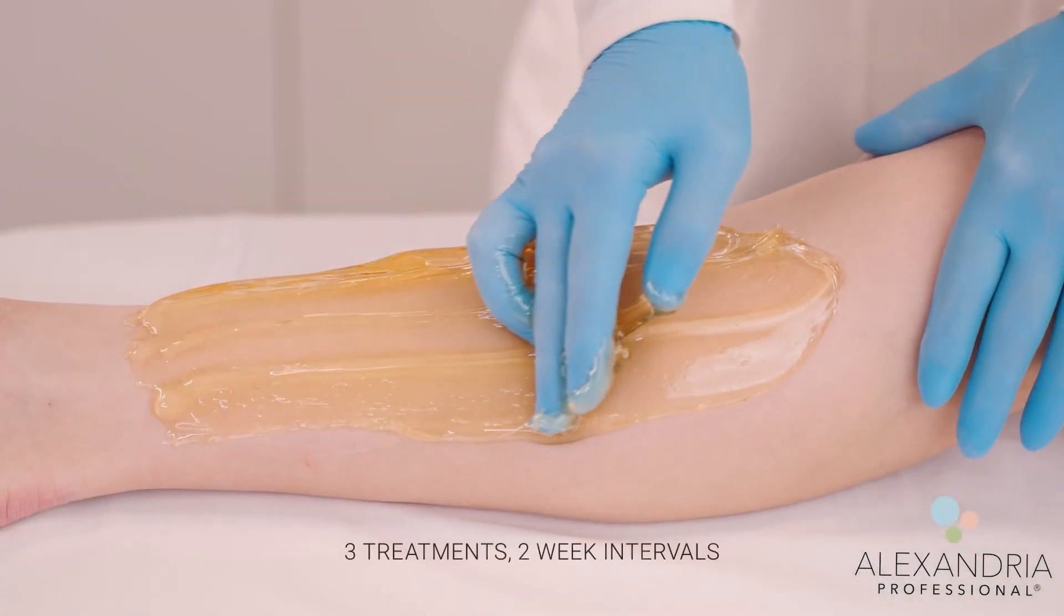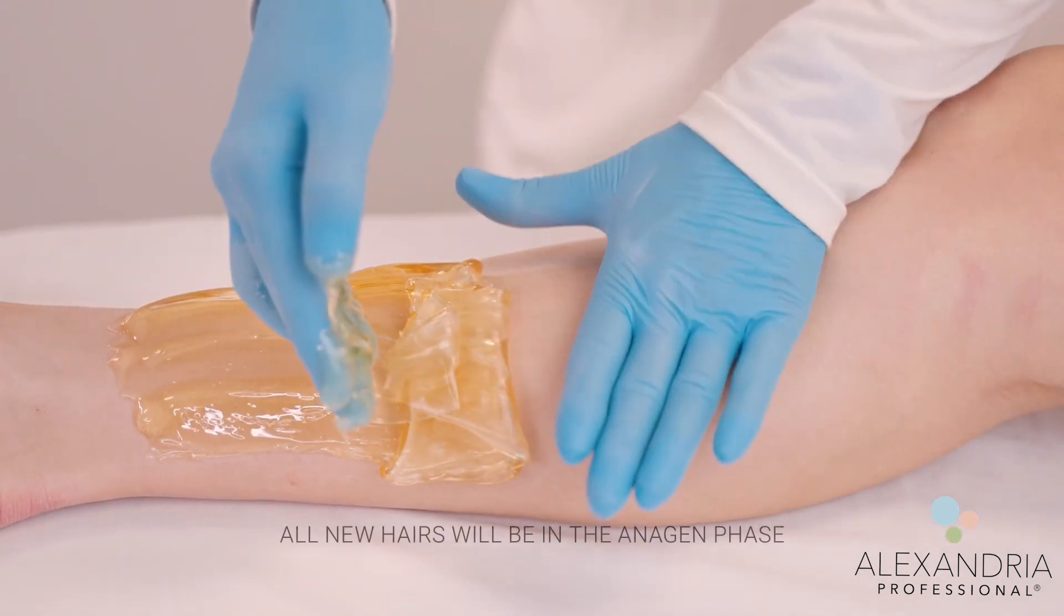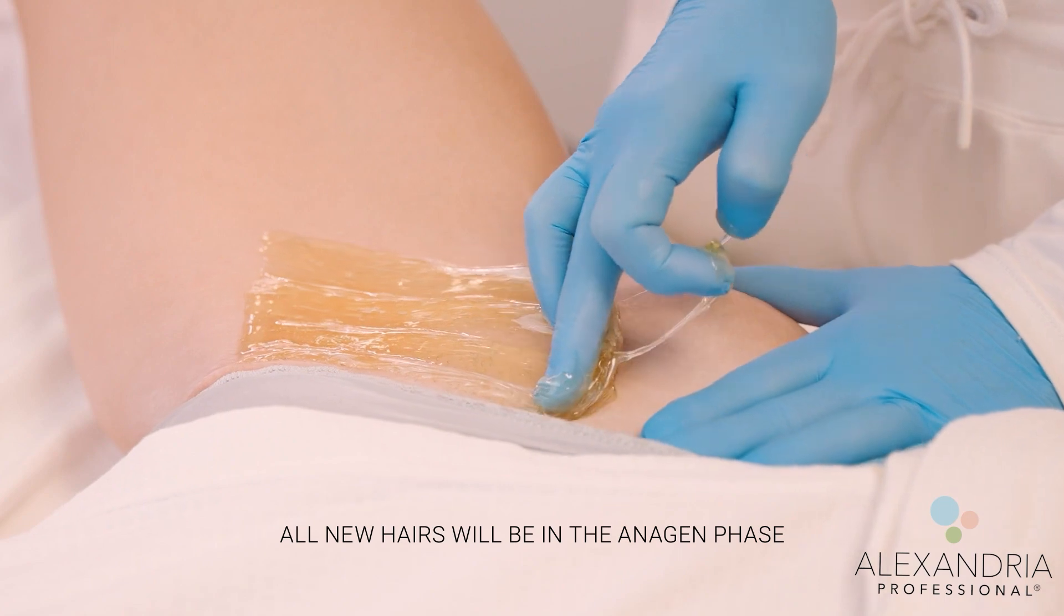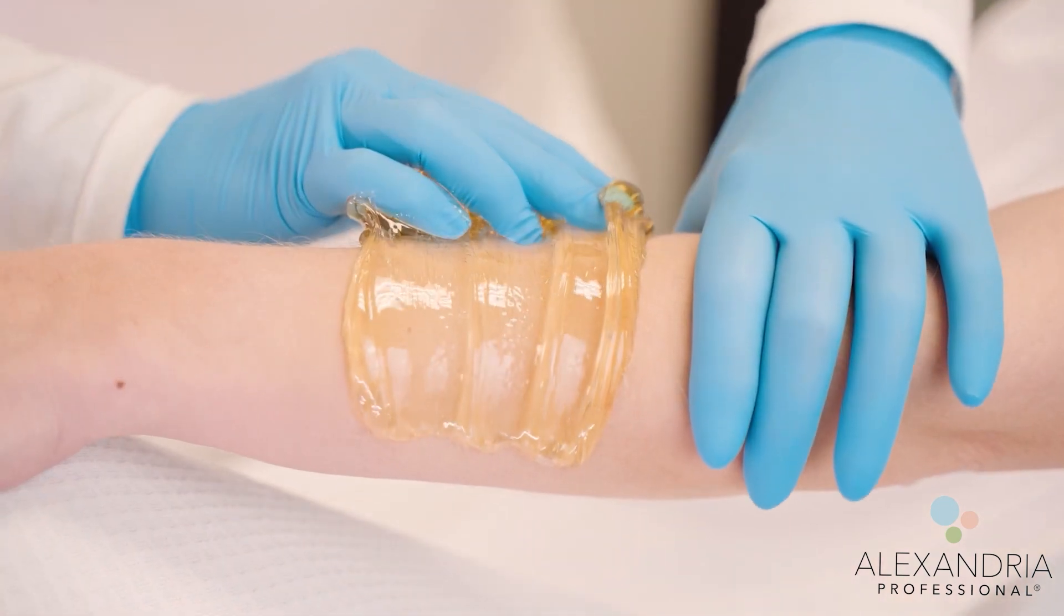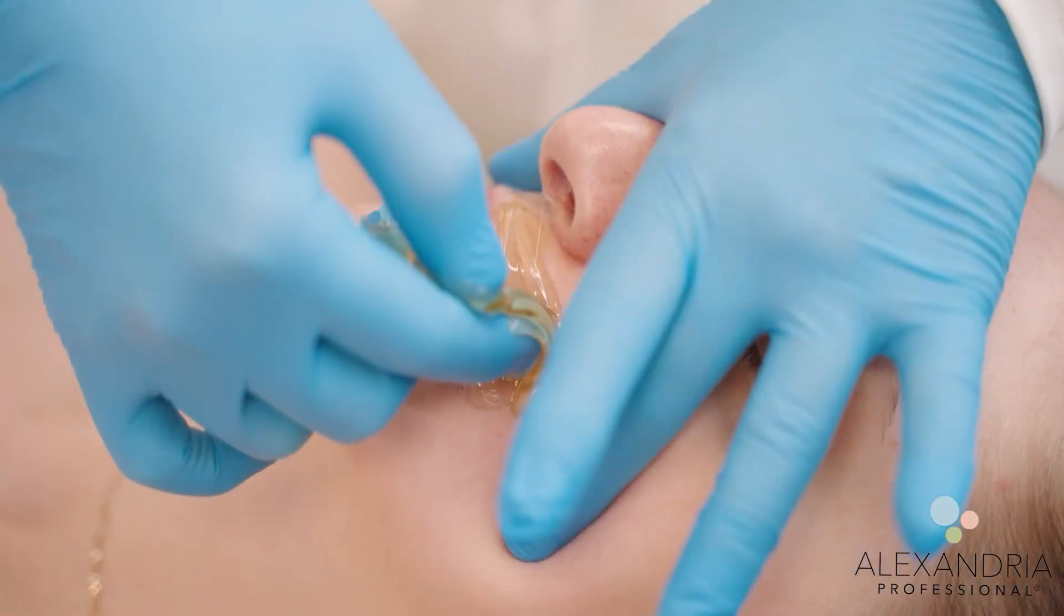Sugaring with proper technique at least three times with two-week intervals will ensure that all new hairs from that point forward are in the anagen phase. Because of their naturally staggered growth timing, the immediate effect is that less hair will be exposed at any given time.